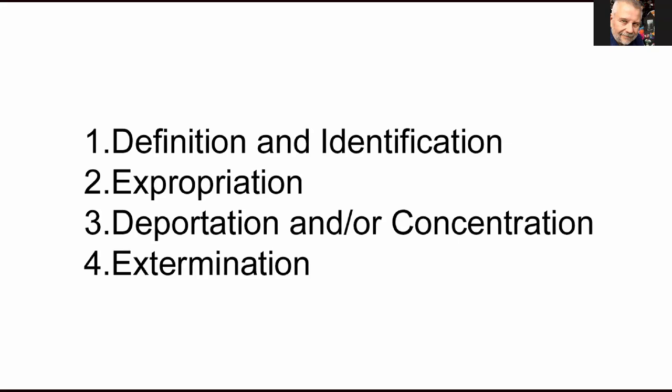In our last lecture, we were looking at the various phases of the Holocaust. I had focused primarily on the identification of European Jews and German Jews — how exactly Jews would have been identified. We already looked at the phase of expropriation, deportation, and the concentration of the Jewish peoples. Today, in this lecture, we're going to start exploring the final phase, what becomes known as the Final Solution — the destruction of the European Jews, the Holocaust.